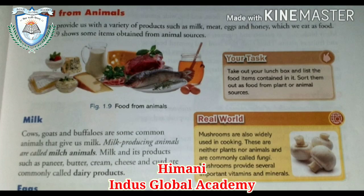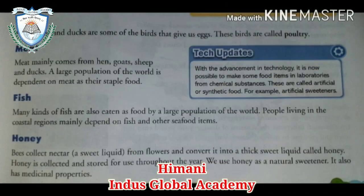After that, second is the egg. Hen and ducks are some of the birds that give us eggs. These birds are called poultry birds. Then meat. Meat mainly comes from hen, goat, sheep, and duck.